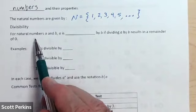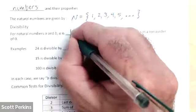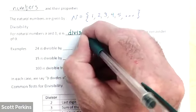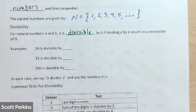For natural numbers, for two natural numbers A and B, A is divisible by B if dividing A by B results in a remainder of zero. This mathematical term divisible means that when I say one number is divisible by another number, it means when I perform the division, the remainder is zero. It goes in an even number of times.